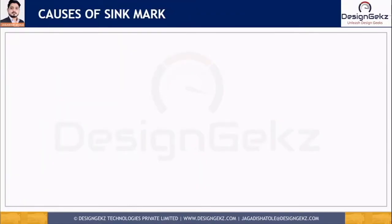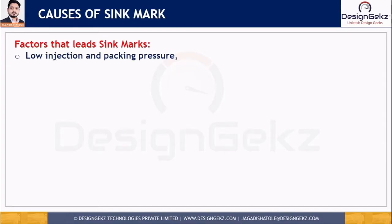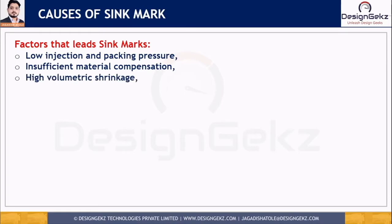Sink marks are caused by localized shrinkage of material at the thicker sections without sufficient compensation during the solidification process, because of unbalanced heat removal. The factors that lead to sink marks include low injection and packing pressure, insufficient material compensation, early gate freeze, and low packing pressure that may not pack or fill the cavity properly. A third factor is high volumetric sinkage, which differs for different materials — different materials have different shrinkage rates, leading to sink marks depending on the material used.